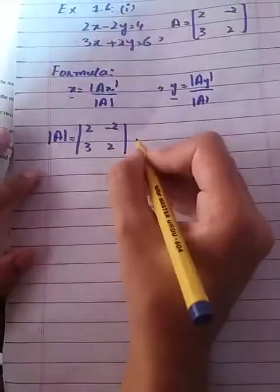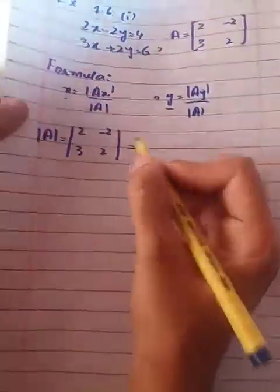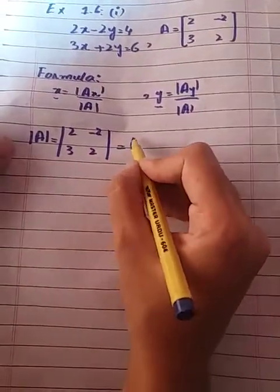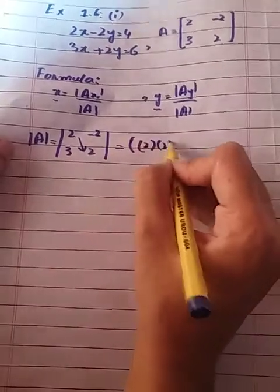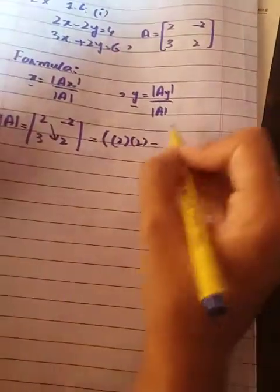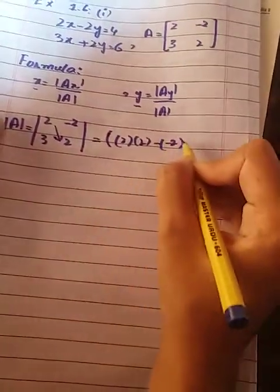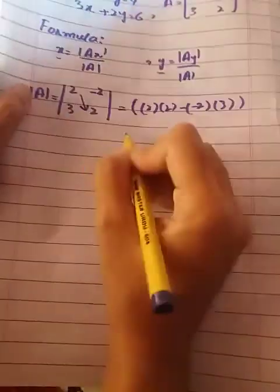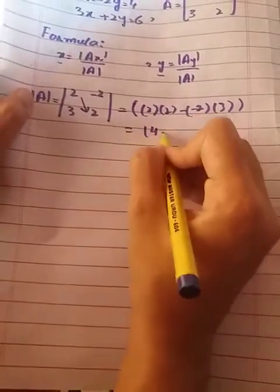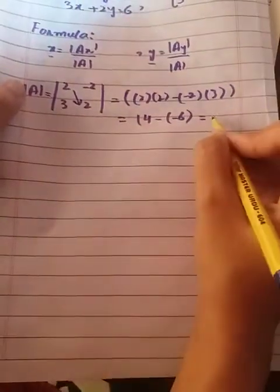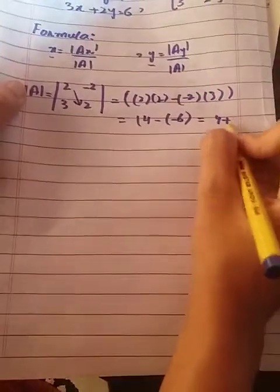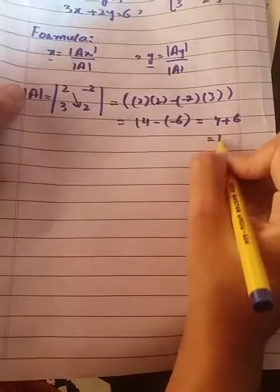To find |A| mod, draw straight lines on both sides of set A, then do cross multiplication. So multiply 2 by 2, which gives 4, and multiply -2 by 3, which gives -6. So 4 minus (-6) equals 4 plus 6, which equals 10.